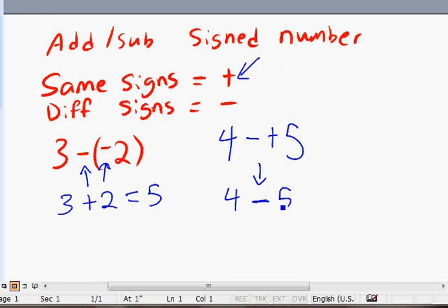Let's do a few more examples. 3 plus positive 6, same signs, this is 3 plus 6, you get 9.